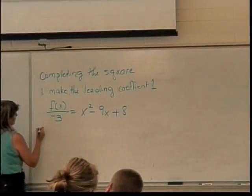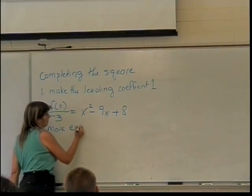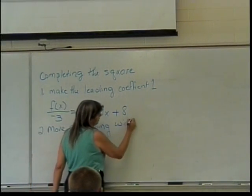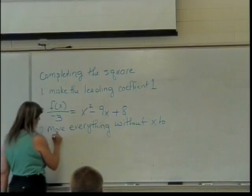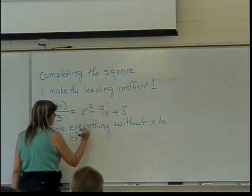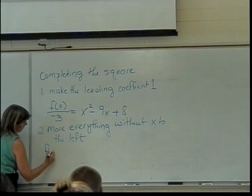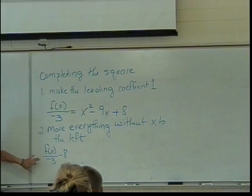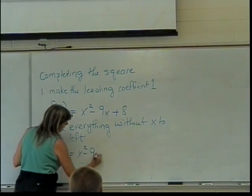Step number two. Move everything without x's to the left. In this case, what's the only thing that doesn't have an x? Eight. That's eight. So when I move it to the left, what will it be? I subtract eight, so it'll be negative eight. So I'll have f(x) over negative three minus eight equals x squared minus 9x.